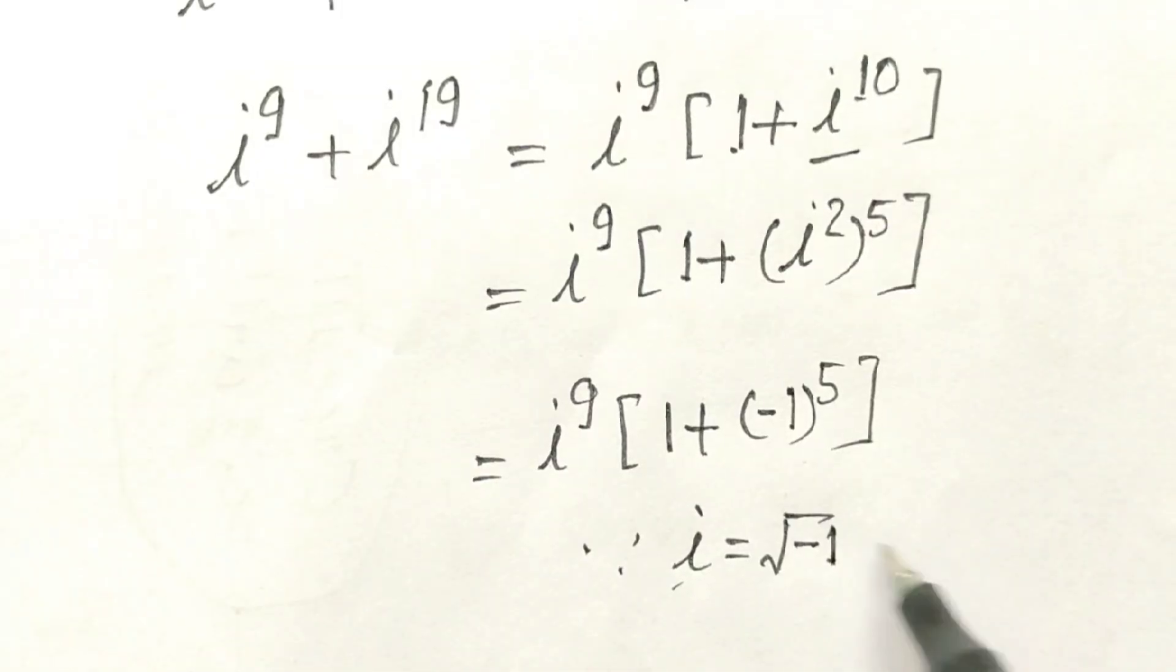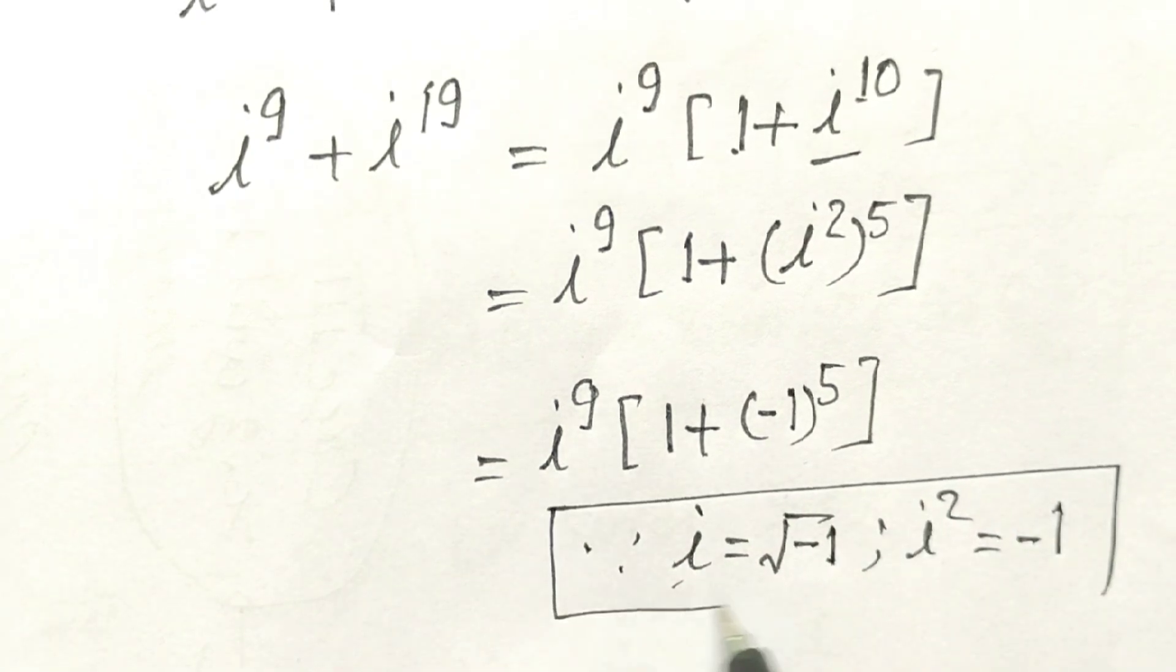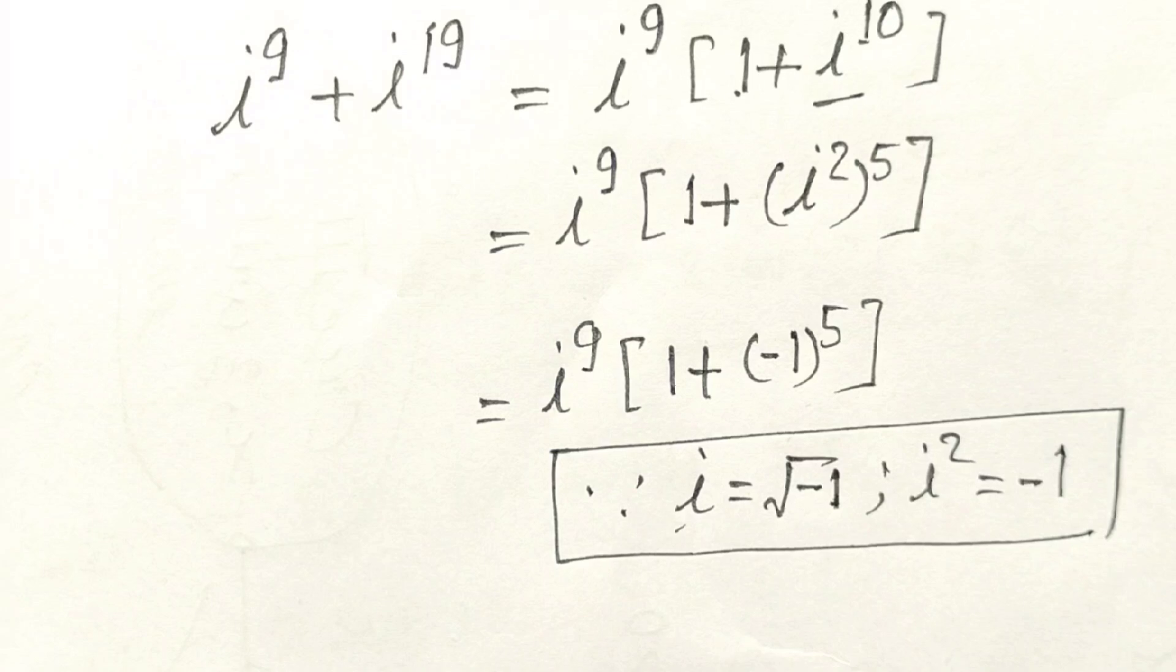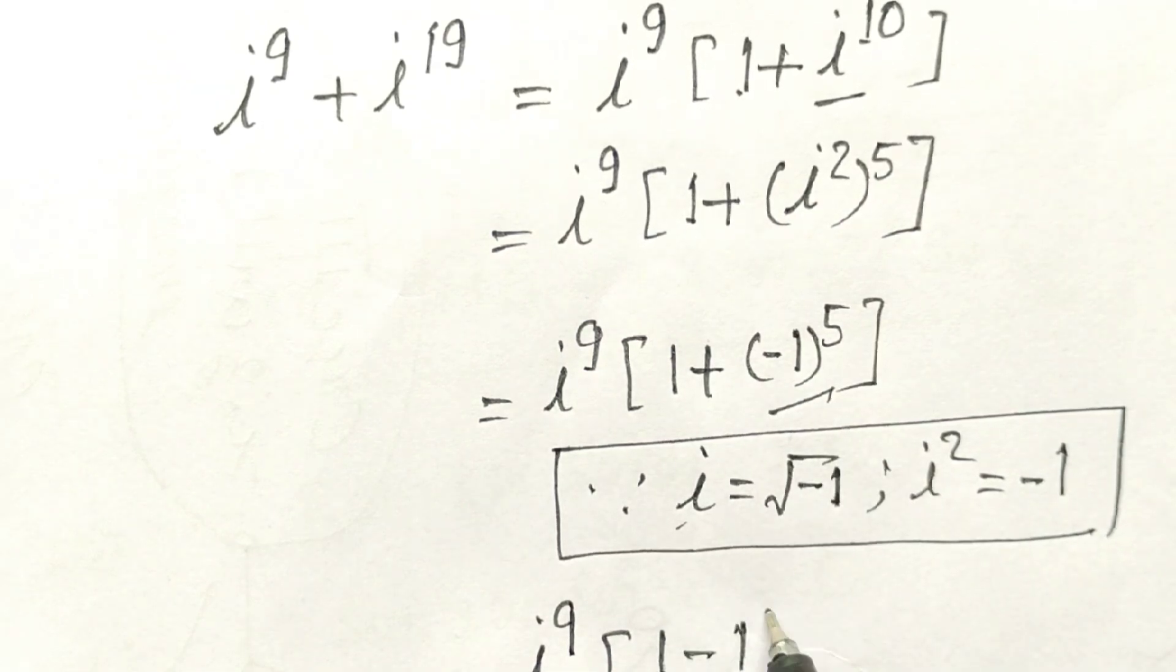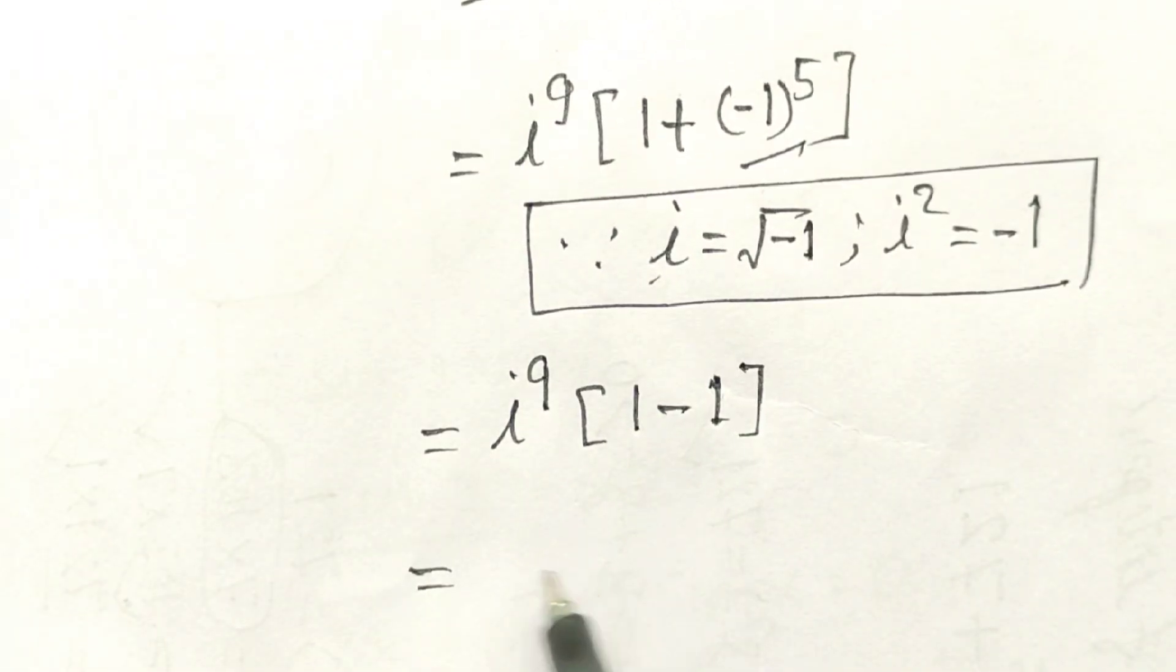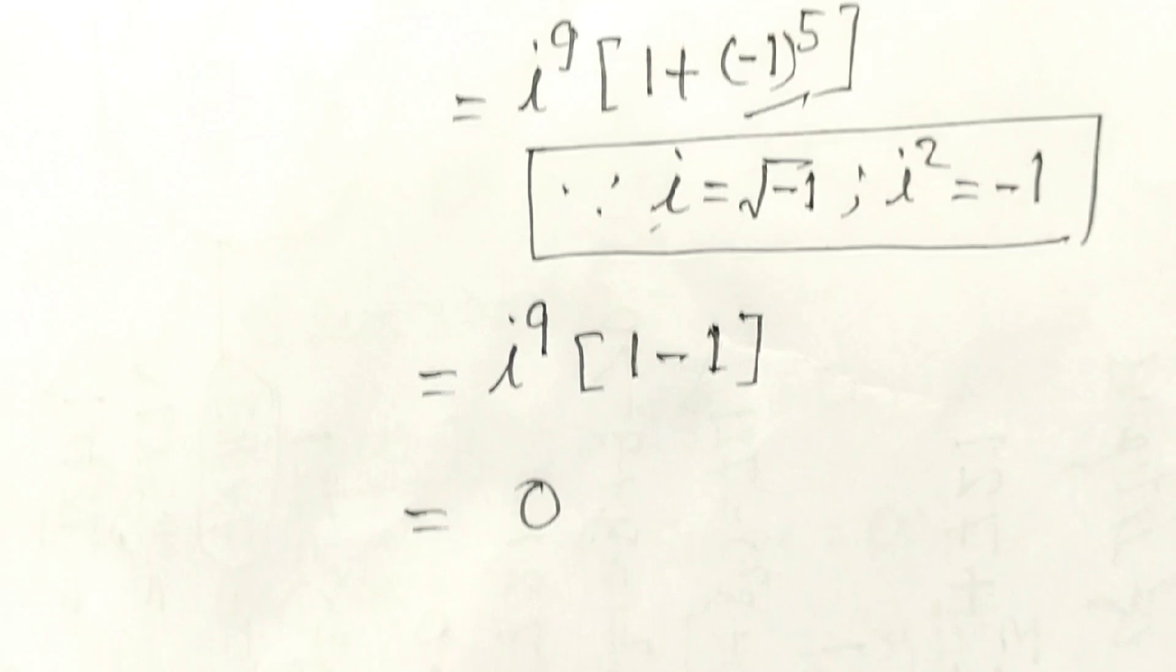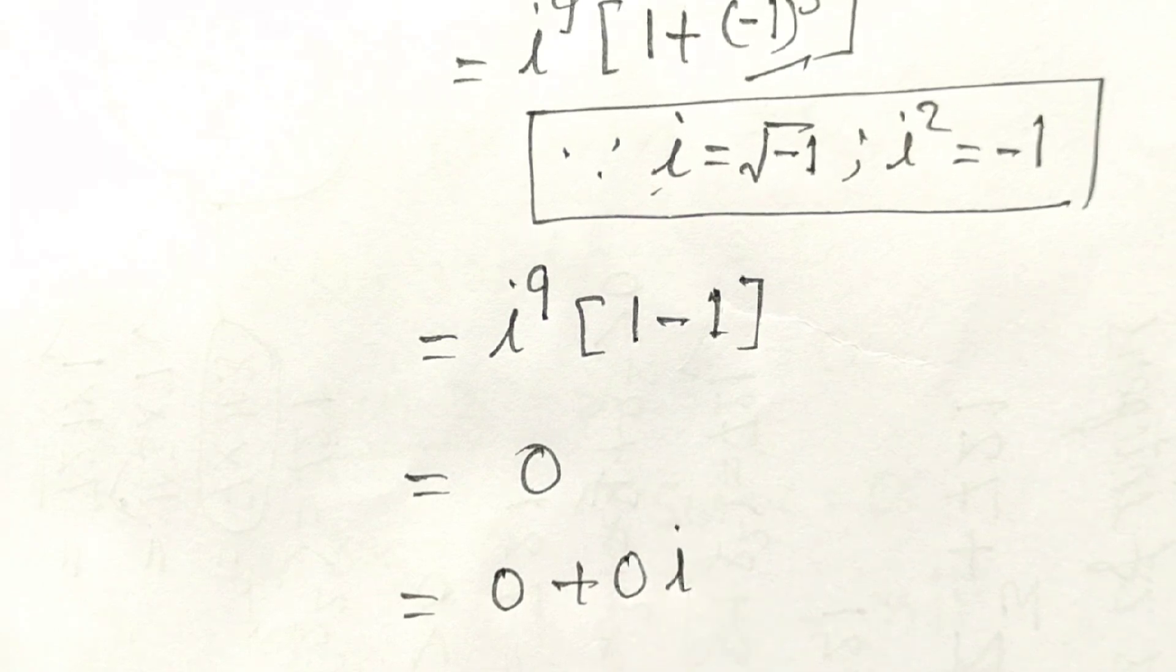So we have i^9 times (1 + (-1)^5), which equals i^9 times (1 - 1). This value equals 0, or 0 + 0i.